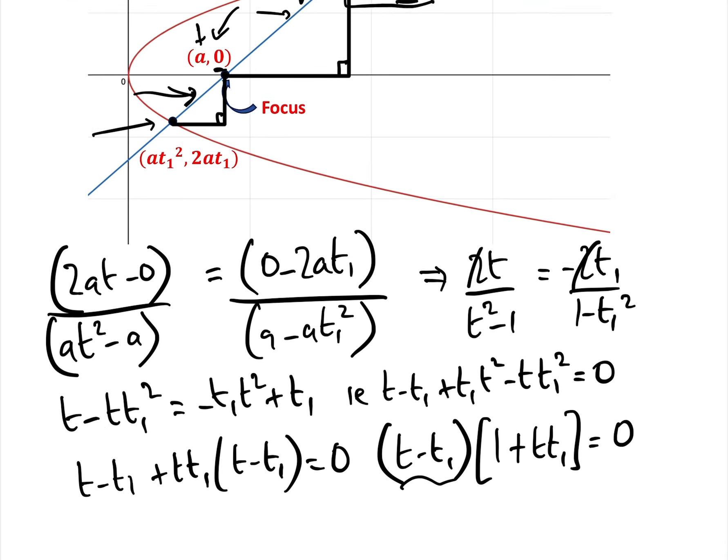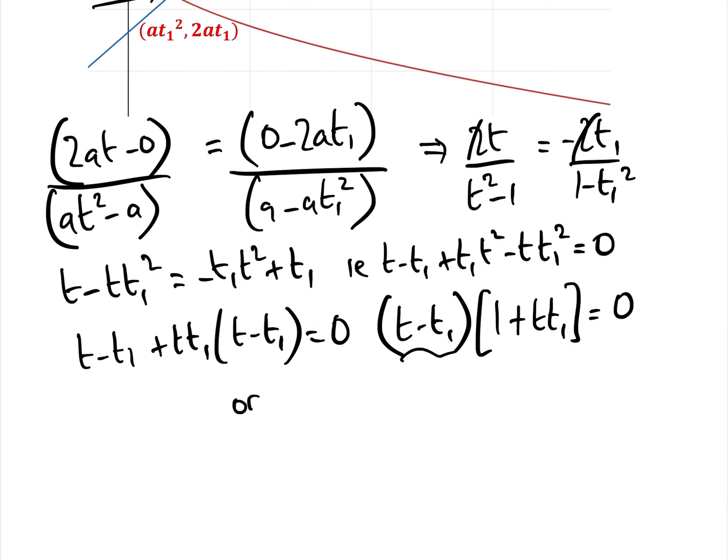well all that's telling us is it's the same point, so we can ignore that. Or tt1 equals minus 1 from that, i.e. t equals minus 1 over t1. And that is a beautiful little formula,